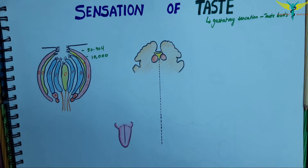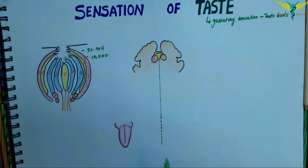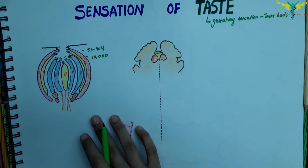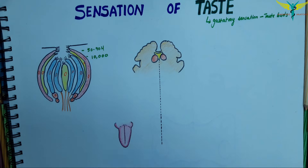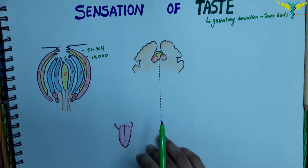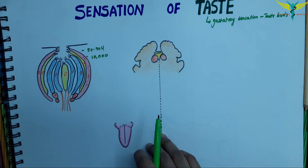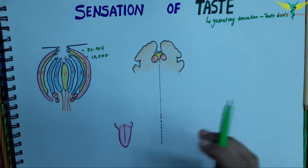Most of the taste buds are present on the papillae of the tongue, and some taste buds are also situated in the mucosa of the epiglottis, palate, pharynx, and the proximal part of the esophagus.